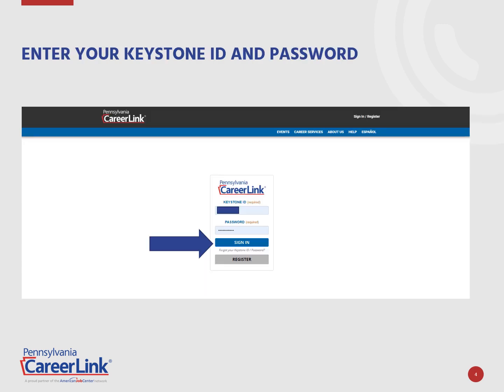Click the Sign In link located in the upper right-hand corner of the page. Enter your Keystone ID and password associated to your employer account that was created with your registration. Not registered? Click the Register button and complete the steps to become a registered employer with us. Need more help? Watch our Employer FAQs Part 1, How to Register, or call your local PA CareerLink office.